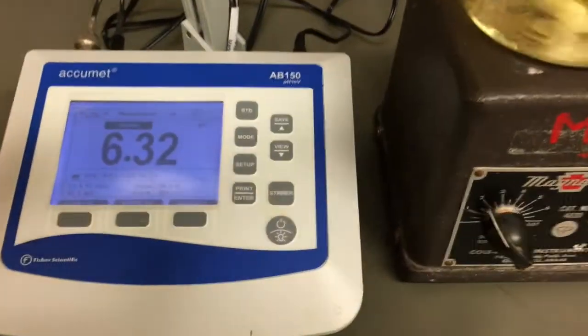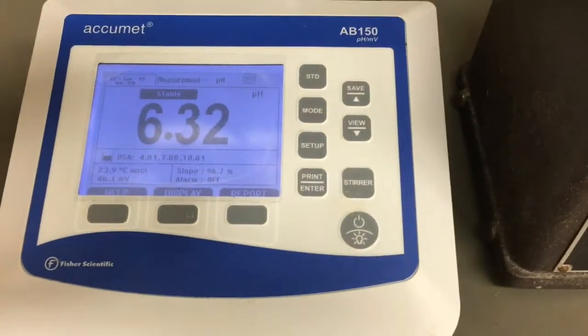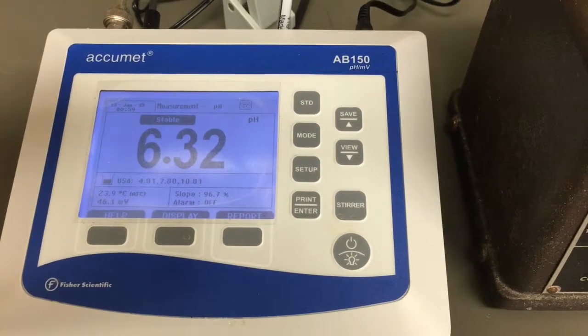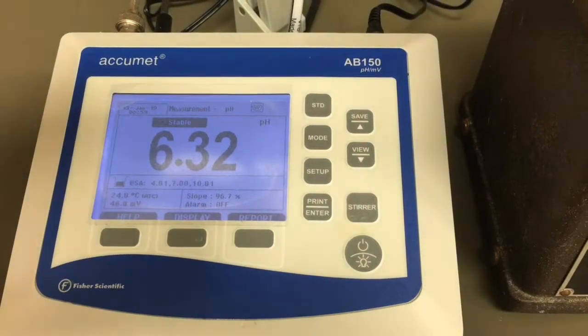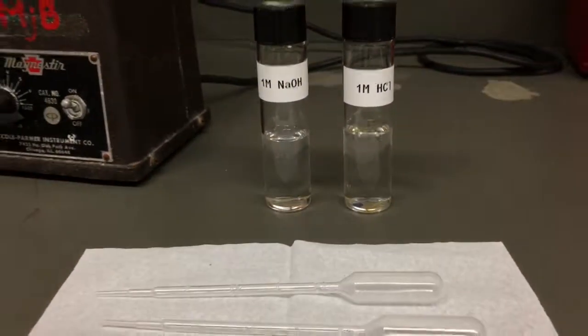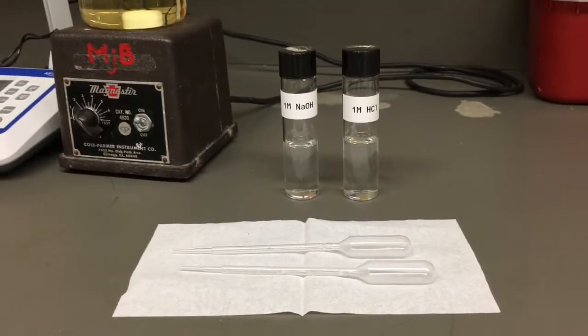We wish to adjust the pH of our solution to a pH of 7 within 0.02 units. As the pH is within 1 unit, we will use a 1 molar sodium hydroxide solution to carefully increase the pH. For larger differences, higher concentrations such as 5 molar can be used to speed up the process.